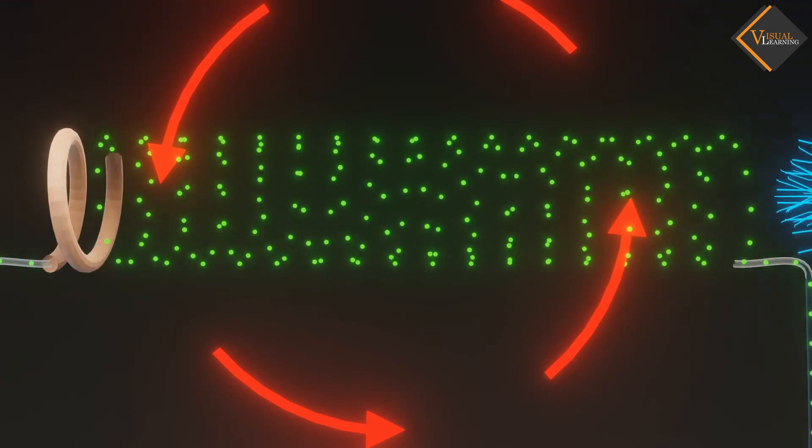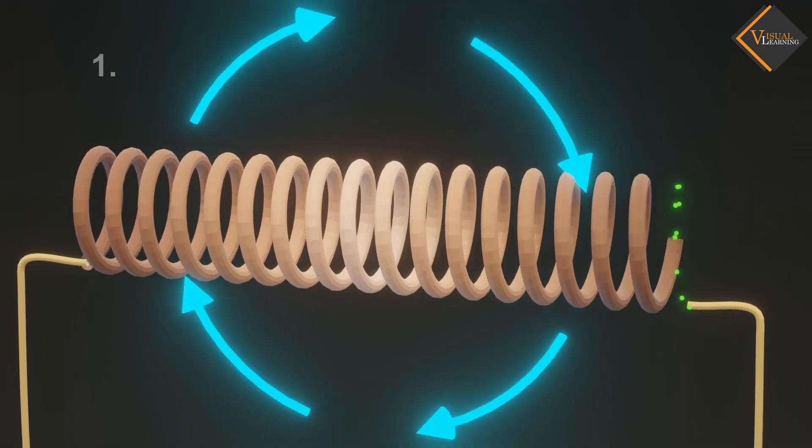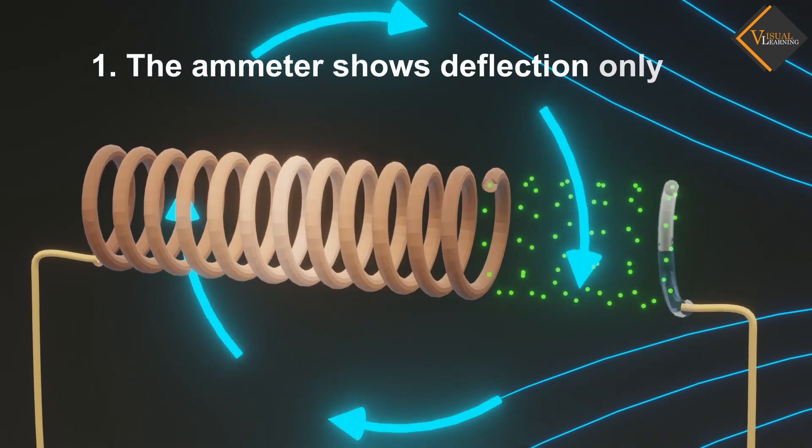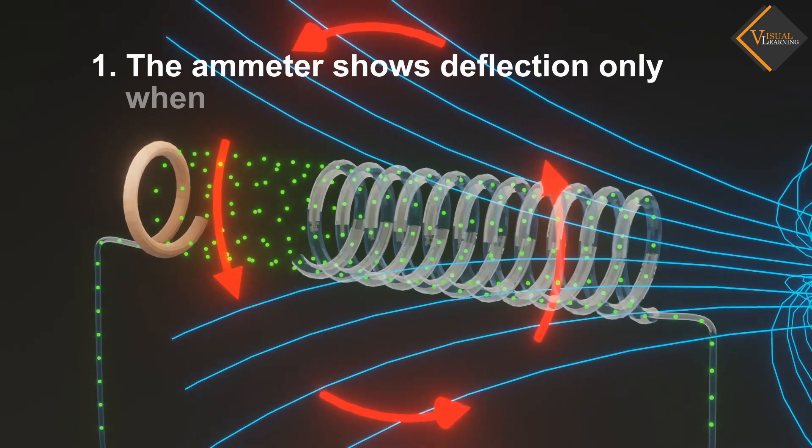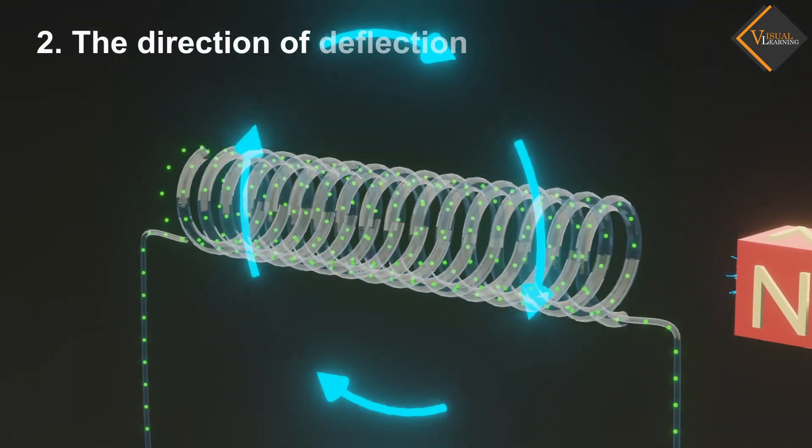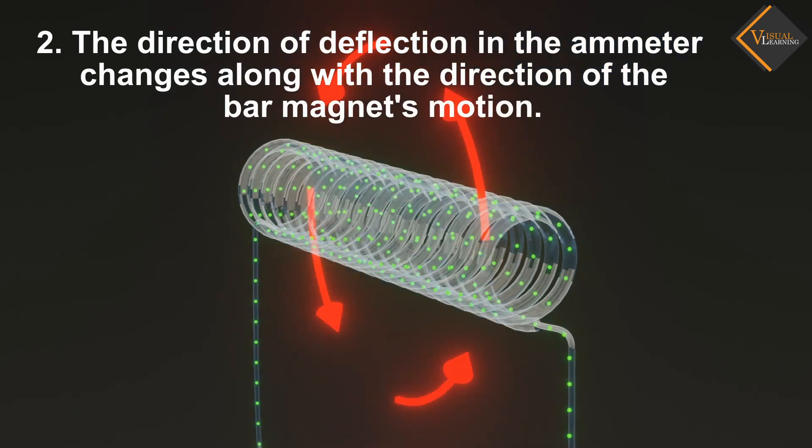From this experiment, we can conclude. First, the ammeter shows deflection only when the bar magnet is in motion. Second, the direction of deflection in the ammeter changes along with the direction of the bar magnet's motion.